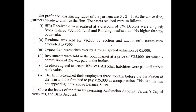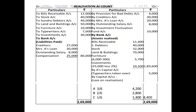Now close the books of the firm by preparing the realization account, partner's capital account, and bank account. In the realization account, on the debit side, we transferred assets at their book value — only those assets that can be realized in cash: to bills receivable 12,000, stock 40,000, debtors at book value 40,000 (not net value), land and building 50,000, furniture 10,000, typewriters 7,000, and investment 30,000.